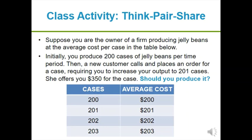Let's close this mini-lecture with a practice problem. Imagine you are the owner of a firm that makes jelly beans. Initially you produce 200 cases, but a new customer calls and places an order for one more case, requiring you to produce 201 cases. The customer is offering $3.50 for that additional case. Take a minute to think about whether you should produce it, and we'll come back to it in the next lecture video.